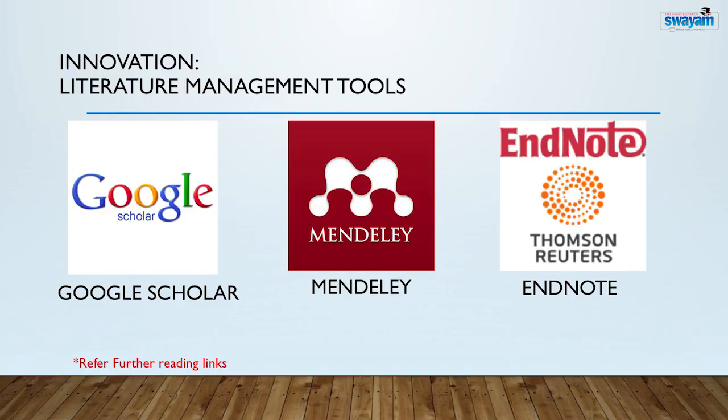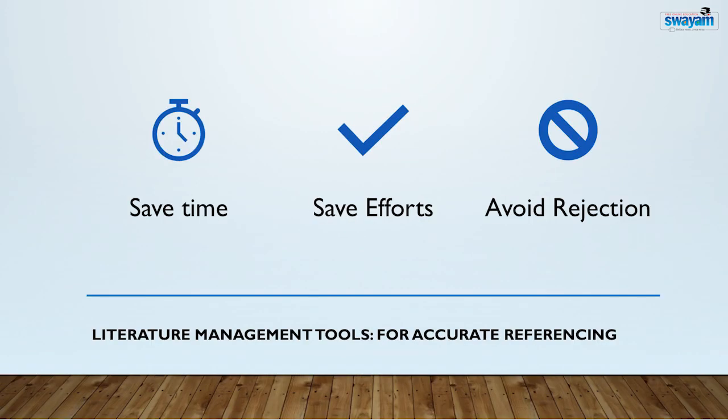Always remember what are the innovations you can have it. You can use the literature management tools like Google Scholar, Mendeley and Note for accurate references. Refer our further reading links for details. We have mentioned it there. It will save your time, efforts and avoid rejections for our manuscript when we plan it.